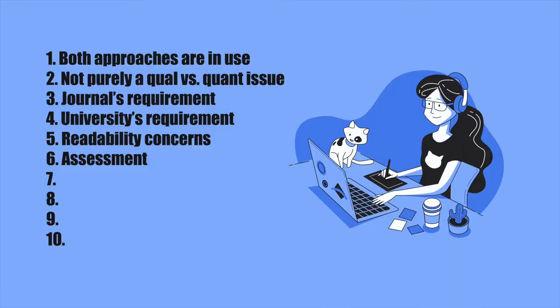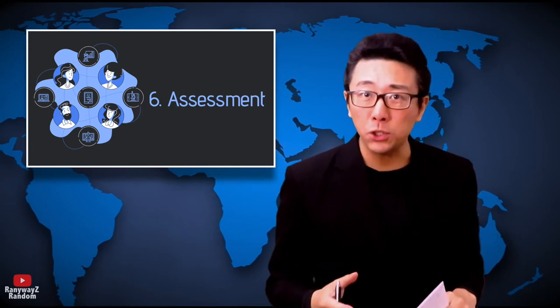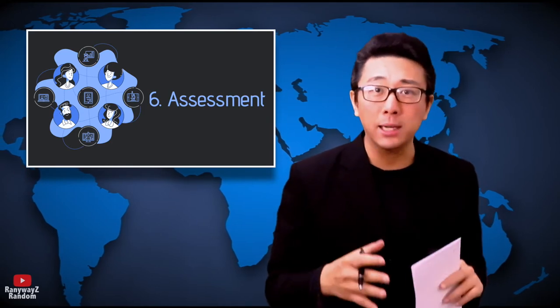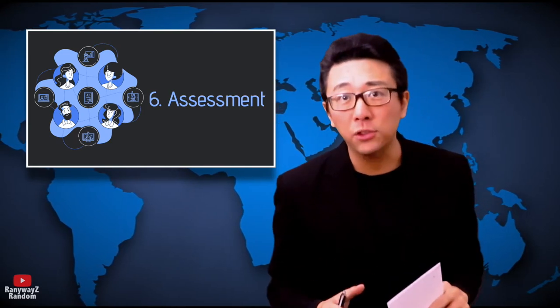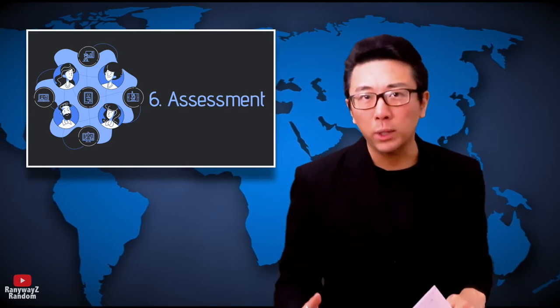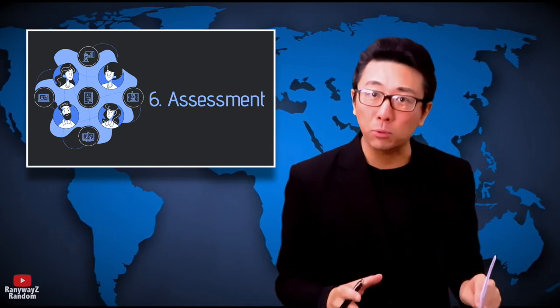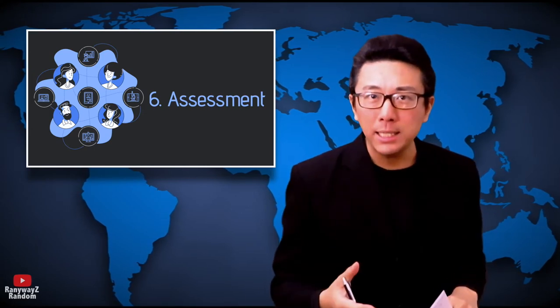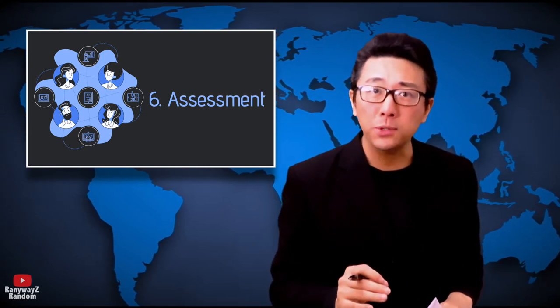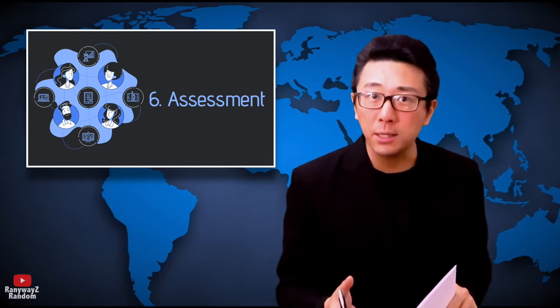Point six: another consideration relates to assessment of research studies. One key function of research journals is to disseminate findings, so they want to increase readability so more people can understand the papers they publish. But researchers sometimes conduct studies not to be published but to be assessed, like when writing a thesis or dissertation. In this respect, some academics argue that for dissertations, it's better to separate results and discussion so each component can be properly assessed. Combining the sections might increase readability for non-experts, but it makes it tricky for assessors to judge what was found and how it was analyzed versus the researcher's interpretations and opinions.